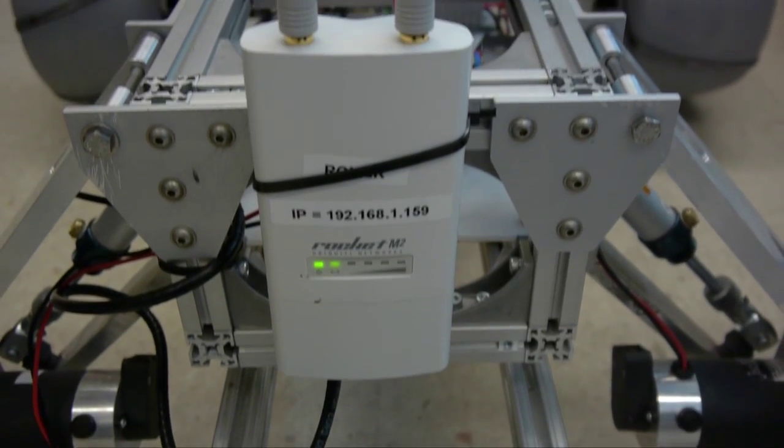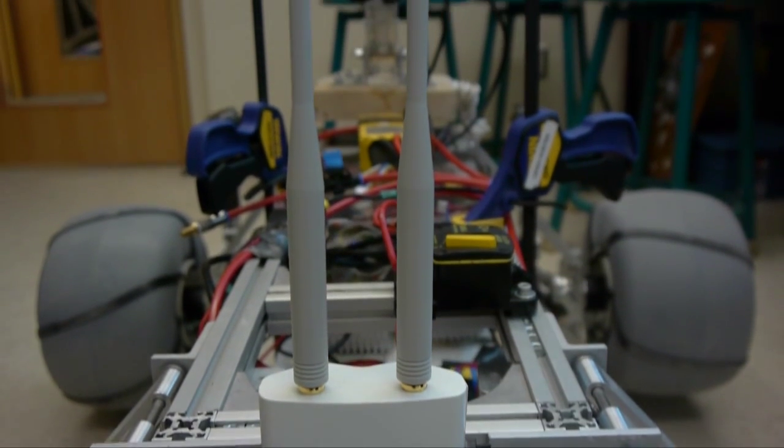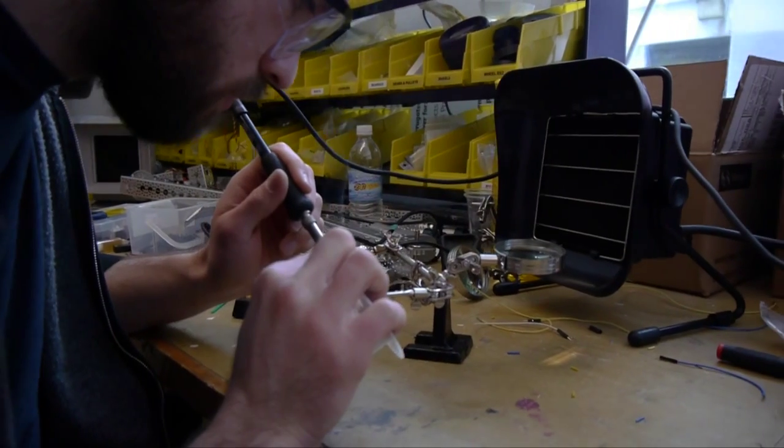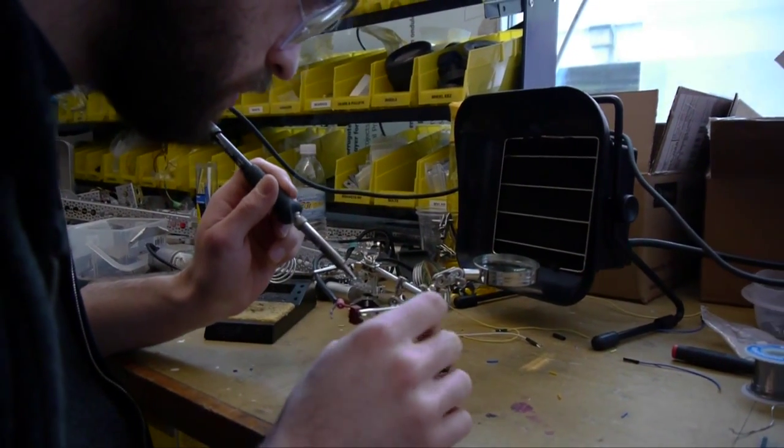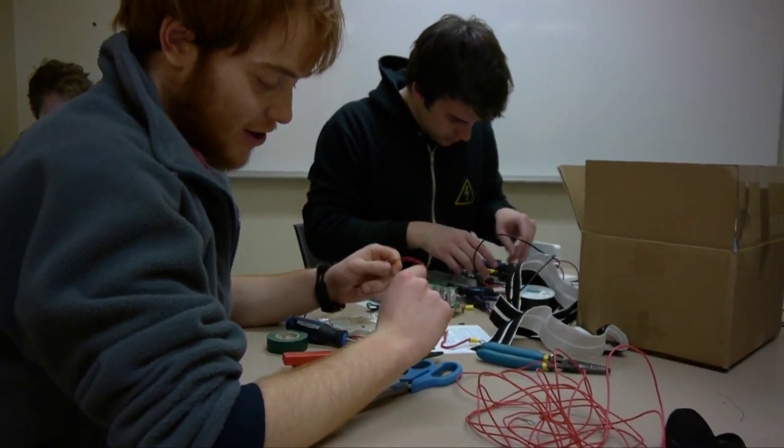I have three priorities for between now and competition. First, wiring anything that hasn't been already mounted on the rover. Second, electrical connections. The team has had problems with loose connections in the past, so this year it's a big priority to make sure that everything is securely crimped, tied, and wrapped.